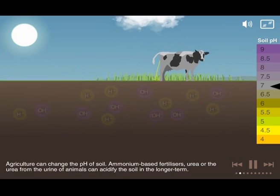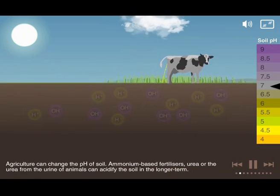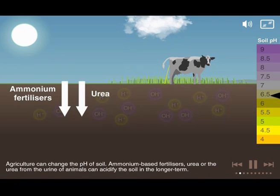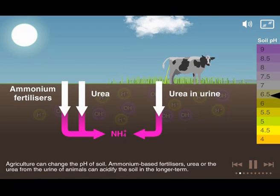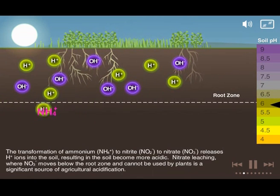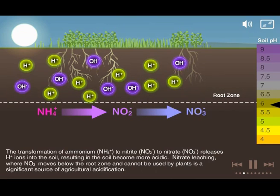Agriculture can change the pH of soil. Ammonium-based fertilisers, urea, or the urea from the urine of animals can acidify the soil in the longer term. The transformation of ammonium to nitrite to nitrate releases hydrogen ions into the soil, resulting in the soil becoming more acidic.